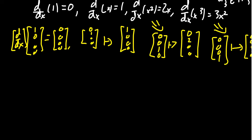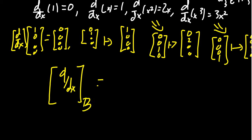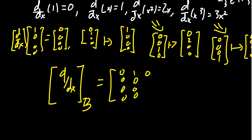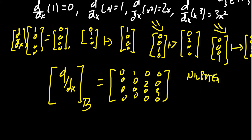Putting this all into a matrix, the derivative with respect to B coordinates is this 4×4 matrix with columns: (0,0,0,0), (1,0,0,0), (0,2,0,0), and (0,0,3,0). So the derivative has a matrix — the derivative is, in fact, a matrix. It's a strictly upper triangular matrix. It's nilpotent. Its eigenvalues are all 0 — specifically 0 appears four times along the diagonal. This analysis of the matrix says something about the derivative map, because the derivative is a linear operation and we can represent it as a matrix.